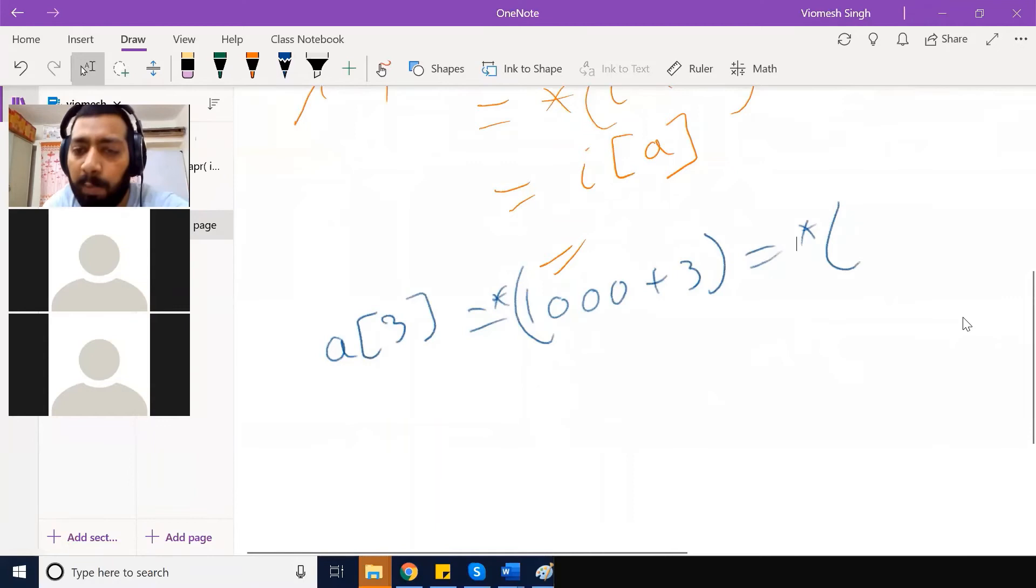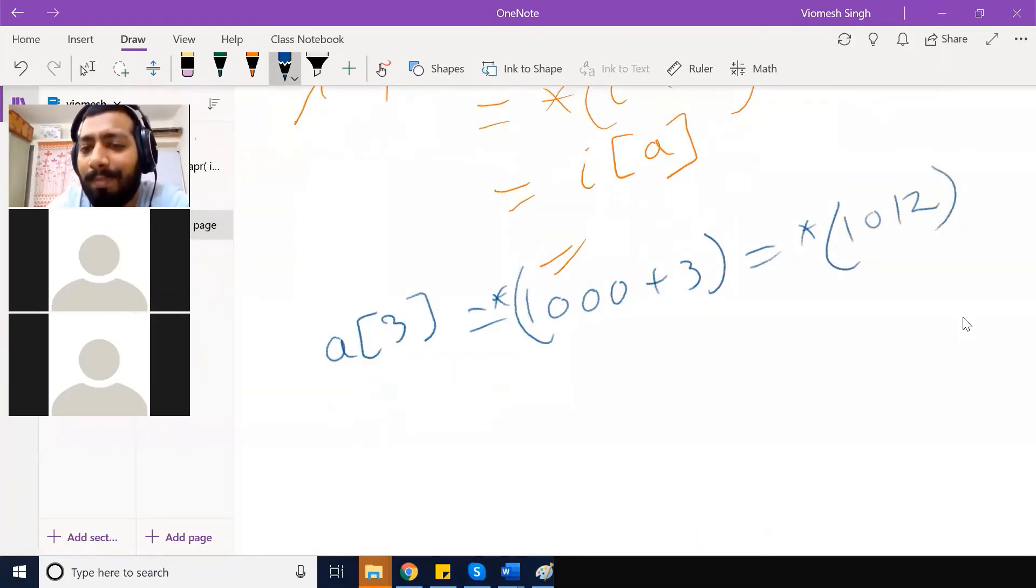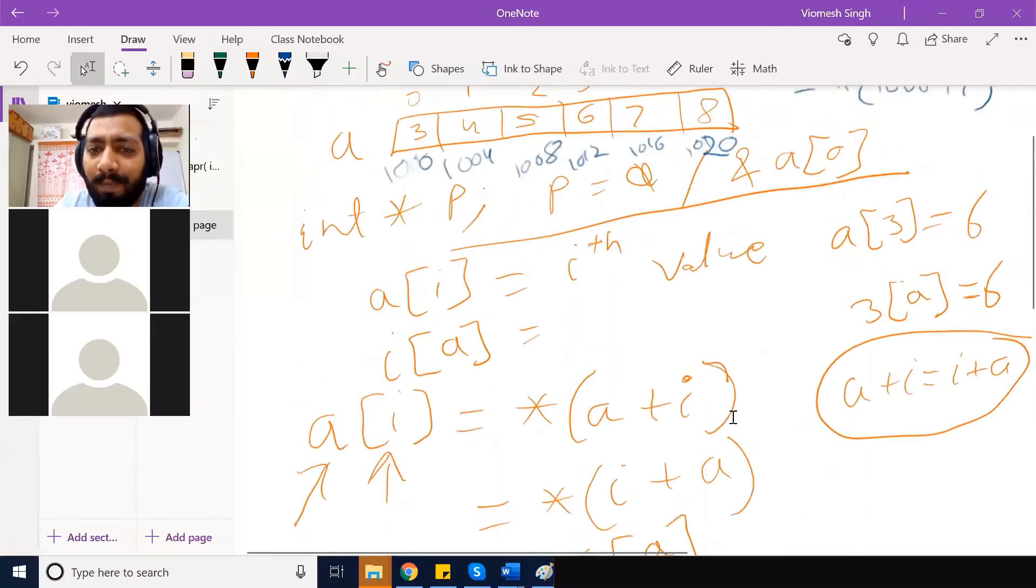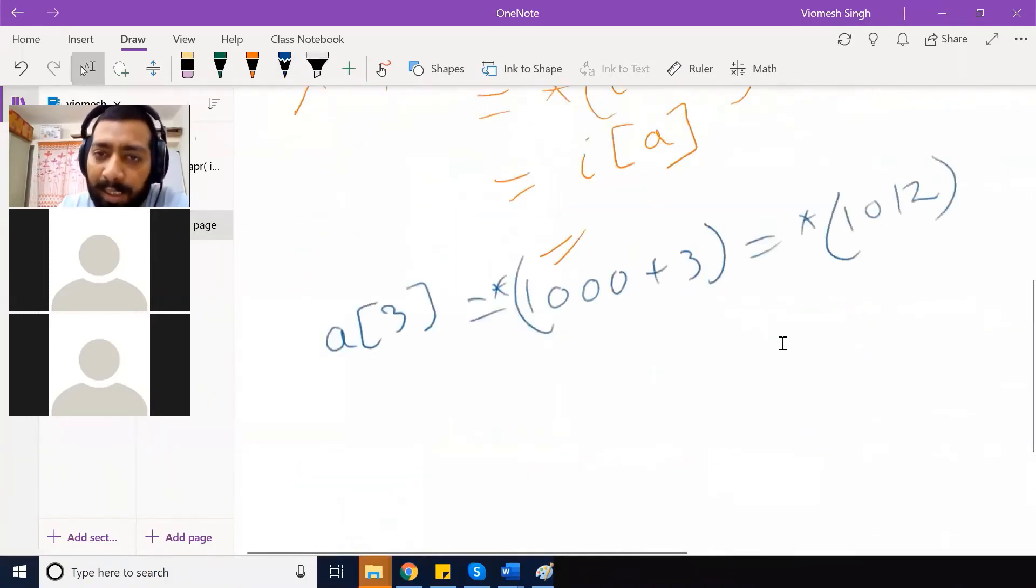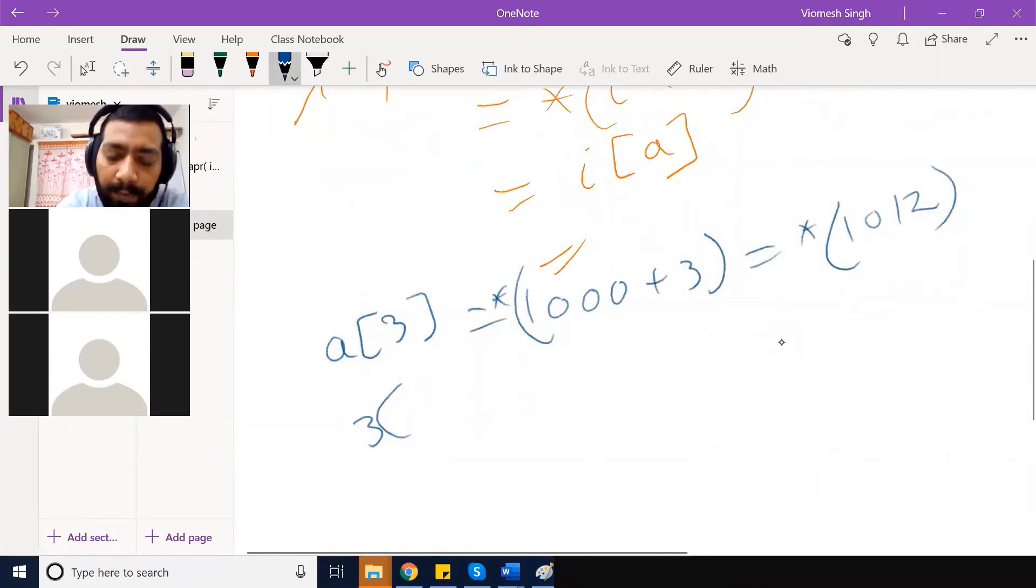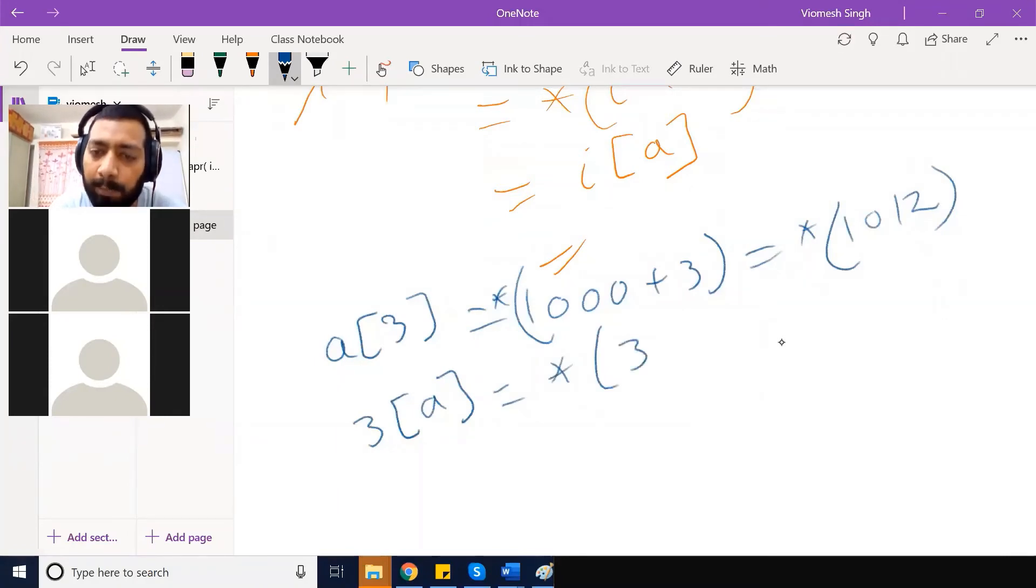Arathi, tell me what would be 1000 plus three? I am just asking you to add 1000 plus three. 1012. 1012, see 1012. So same way when we are writing three of a, again it will do star of three plus one thousand. That means it will take the value from the location at 1012, so they are the same value which is six. Is it clear?